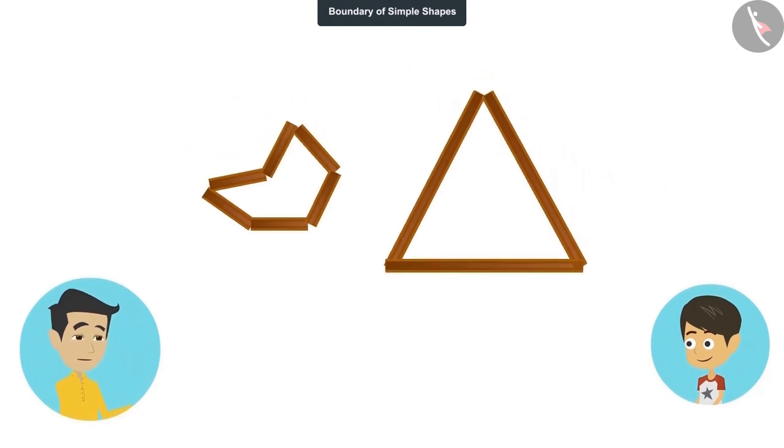Now tell which of these two boundaries is longer. The length of the boundary of this triangle shape is 15 centimeters, which is more than the length of the boundary of the shape with six edges. Absolutely right.